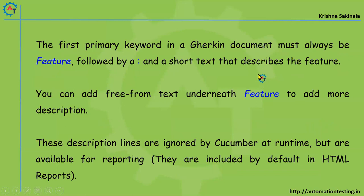The first primary keyword in a Gherkin document must always be 'Feature' followed by a colon and a short text that describes the feature. So when you're writing any feature file it will start with the keyword 'Feature', followed by a colon, and then a short description about what the feature is. You can also add free-form text underneath the feature line to add more detailed description.